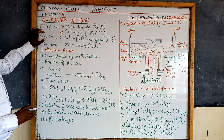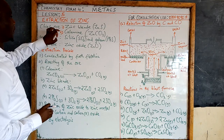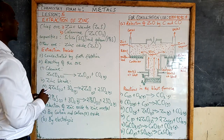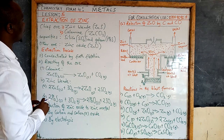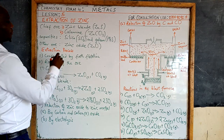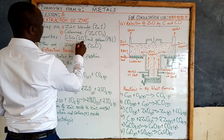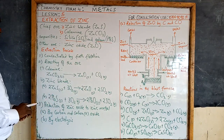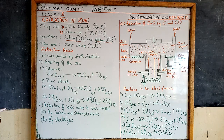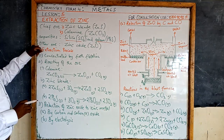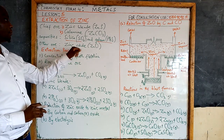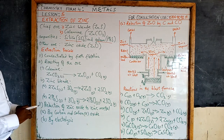The impurities in this ore are silica and galena, which is a sulphide. The other ore of zinc is zinc oxide.